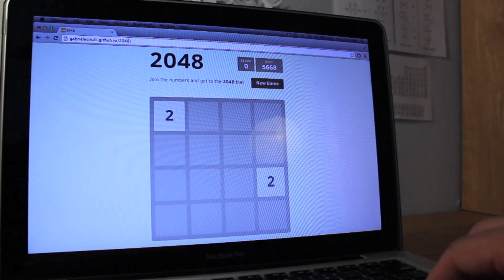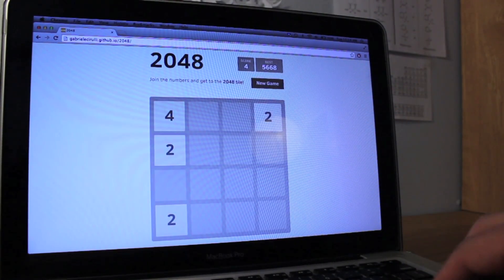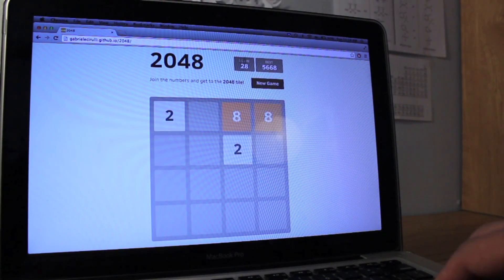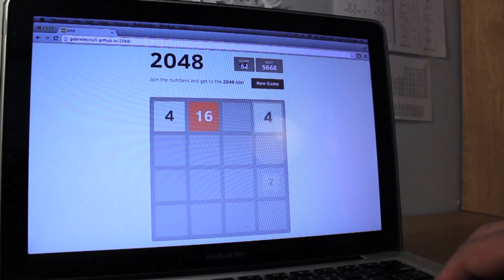Goal is to get the 2048 tile, which doesn't seem that bad because the numbers add up quickly. You put pairs of numbers together, twos and twos make fours, and fours and fours make eights, and eights and eights make sixteen.